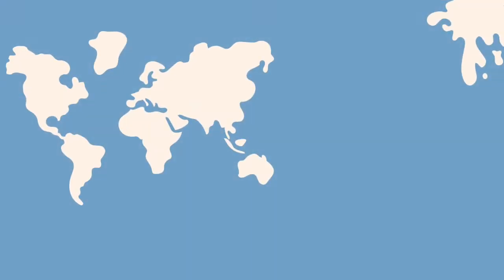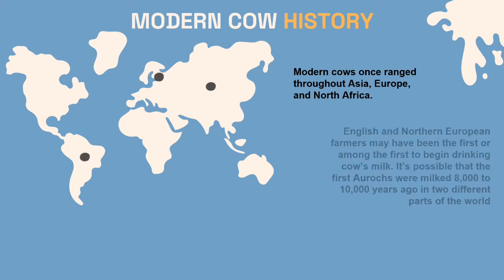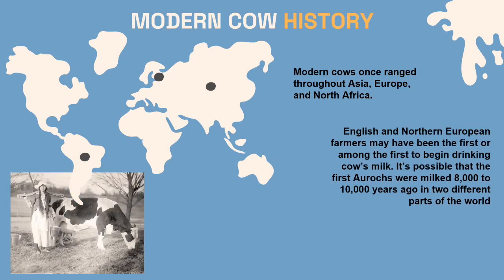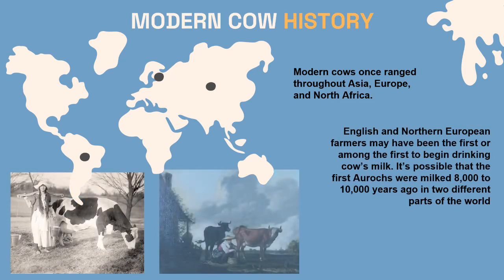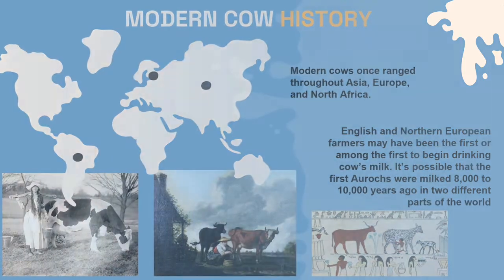Moving on to modern cow history. Modern cows once ranged throughout Asia, Europe, and North Africa. English and Northern European farmers may have been the first, or among the first, to begin drinking cow's milk. It's possible that the first aurochs were milked 8,000 to 10,000 years ago in two different parts of the world.